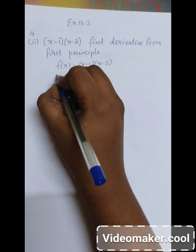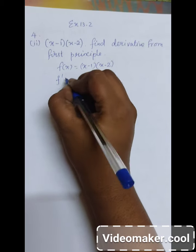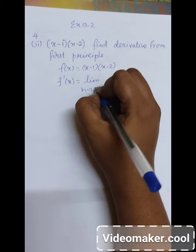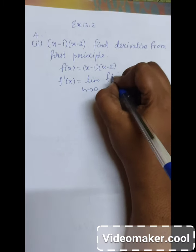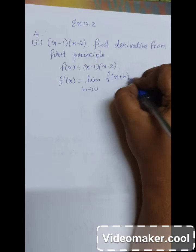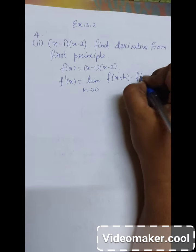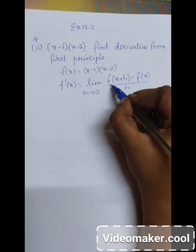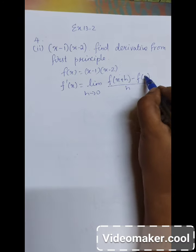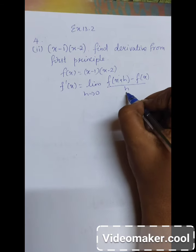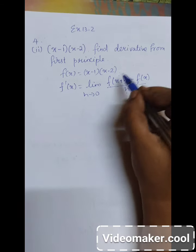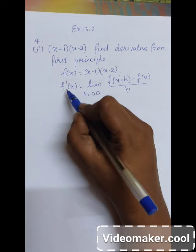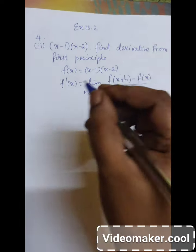According to the first principle of derivative, the derivative of a function is equal to limit h tends to 0 of f of x plus h minus f of x divided by h. This value as h tends to 0 will give us the derivative of the given function.